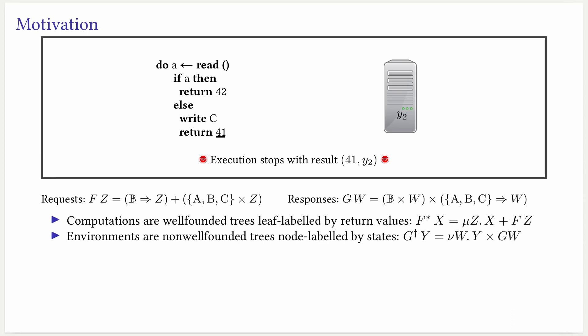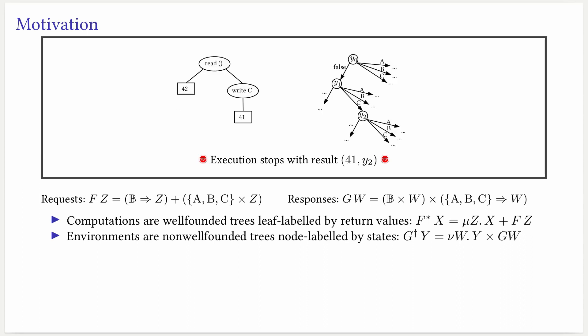We'll have a functor f which models requests and a functor g which models responses. Then the computations will be well-founded trees which in their leaves have the return values of the computation. The environments will be non-well-founded trees in which the nodes have the current state of the computation. For example, the program we had before and the machine will be modeled like this. We can see that computations are either a leaf or a request that will have, in the case of a read, two possible continuations.